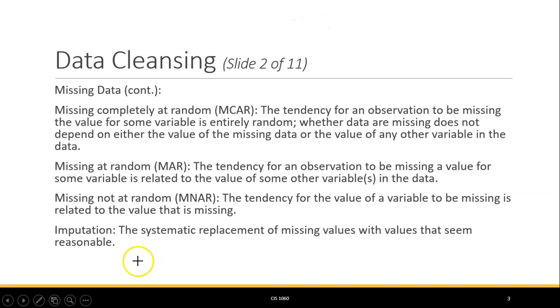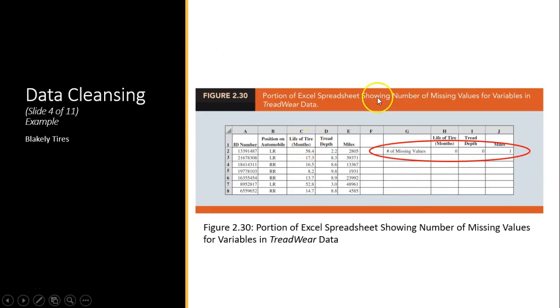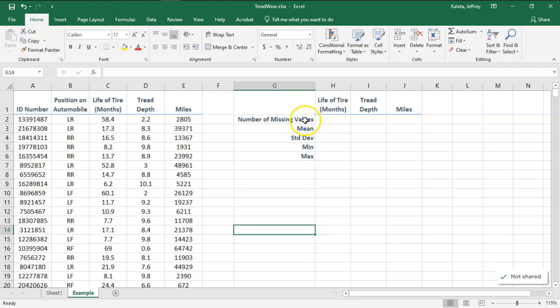What do we do with that kind of thing? Well, we do some level of imputation, and that's replace the missing value with something that will help us conduct our analysis. We have an example here. It's Blakely Tires, they're a tire company, and what they do is they collect data on tires where there's known issues. We have a sample data set.